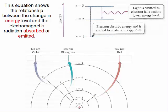When an electron goes from the first energy level to the third energy level, energy has to be absorbed and the electron is excited to an unstable energy level. It can't stay at that third energy level long. It eventually comes back down, and as it comes back down, light is emitted when the electron falls back to ground state. That's all we saw in the glow-in-the-dark board — we excited the electrons and as they came back down, they released green light.